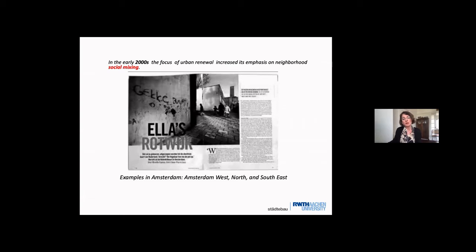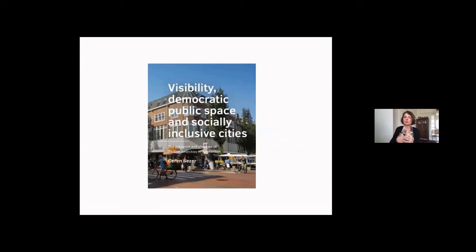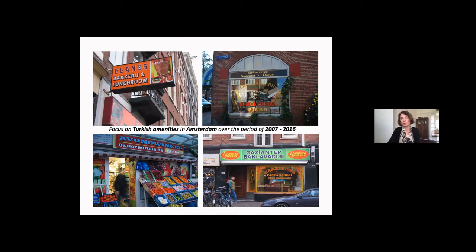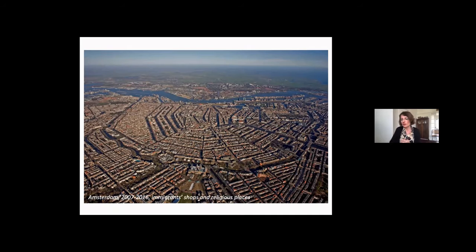In this context, my research was about developing a different perspective to study the social inclusion aspect of cities — from public space. My research focused particularly on studying the presence of vulnerable groups, in this case immigrant groups, in public space as a manifestation of their rights to participate in public life of the city, which is a key feature of their social inclusiveness and of achieving socially inclusive cities. I focused on the presence of Turkish migrants by looking at their amenities — shops, restaurants, organizations, religious places — and studied how their presence in public space changed in the time period of 2007 to 2016 in Amsterdam.